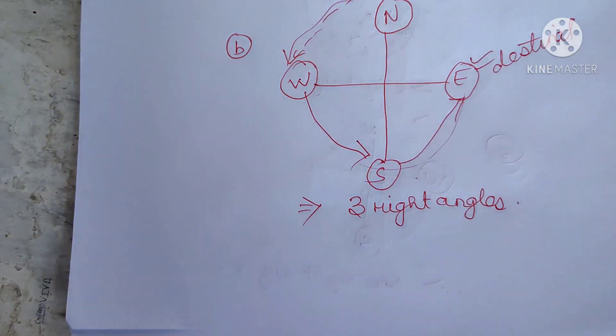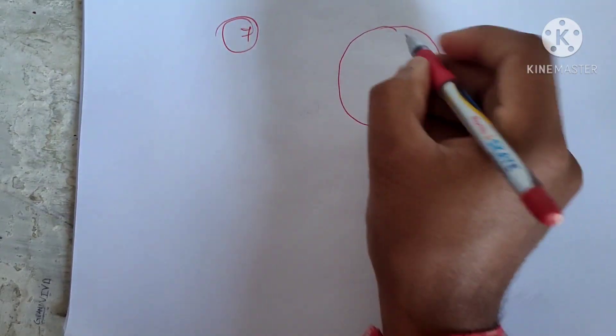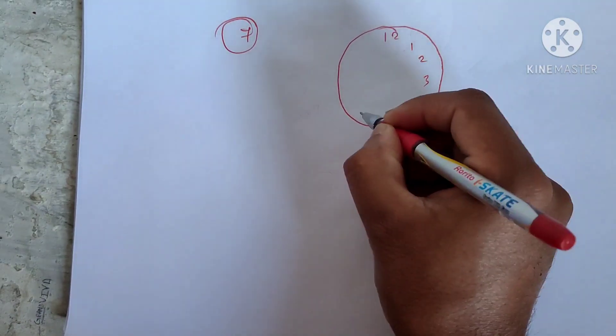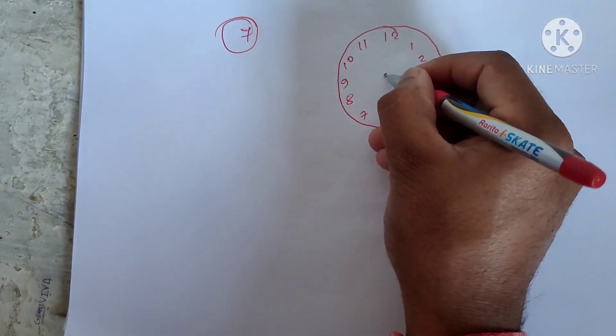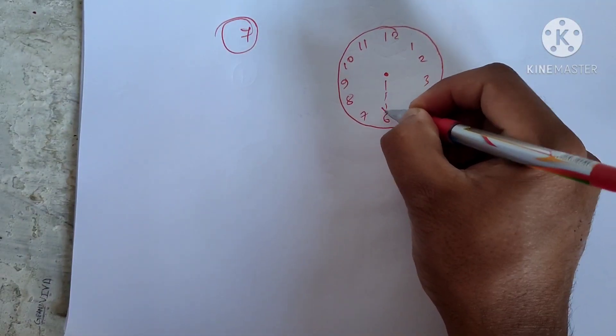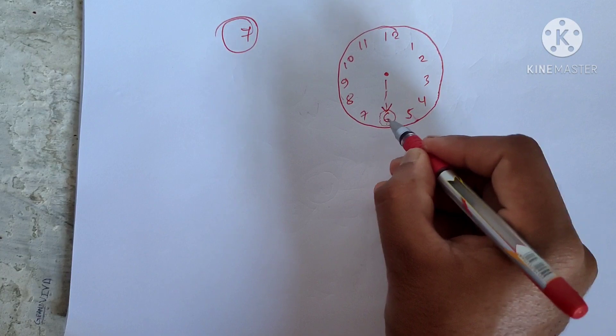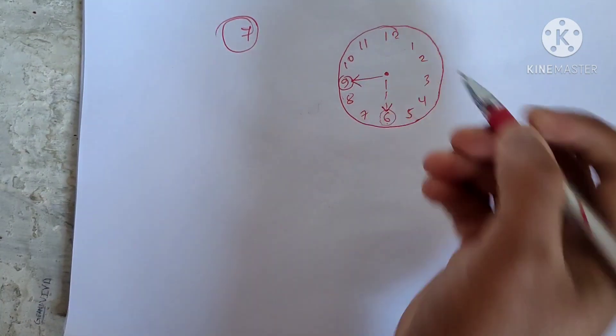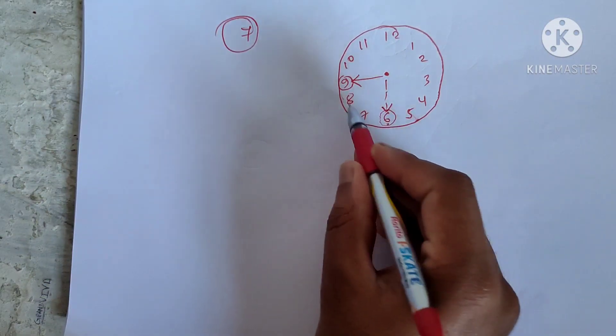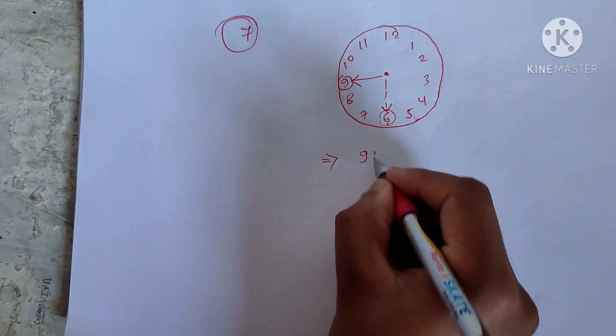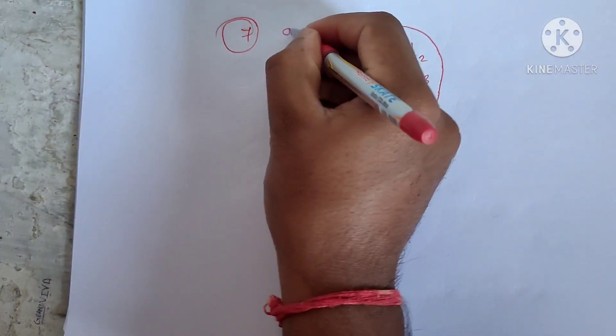Number seven is the last question for this exercise. Where will the hour hand of a clock stop if it starts from 6 and turns one right angle? Draw the clock. We are at 6. Count four: one, two, three, four — this is our first right angle. Since the question says only one right angle, the hand stops at 9. The answer is 9.